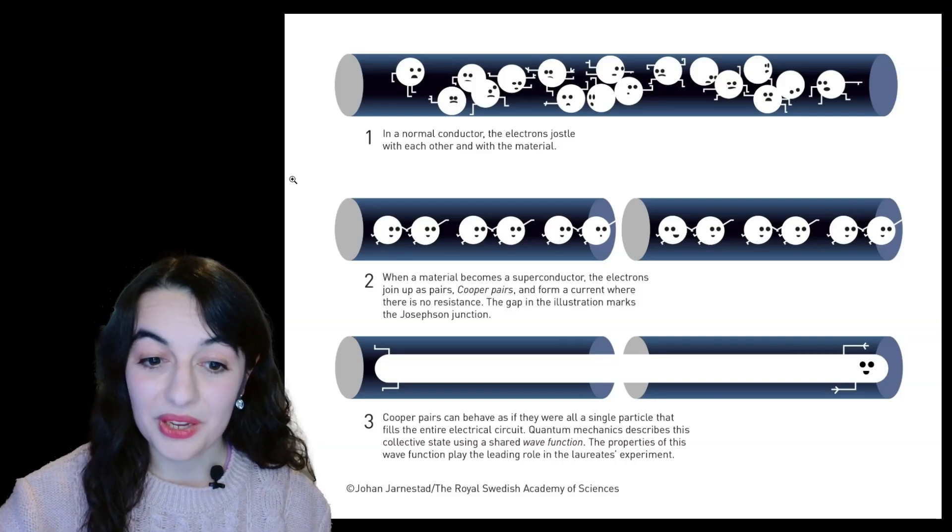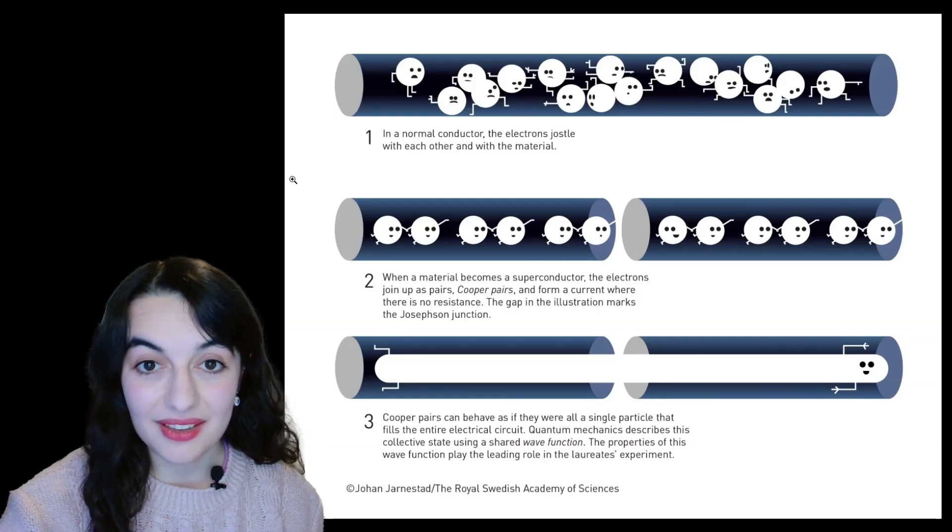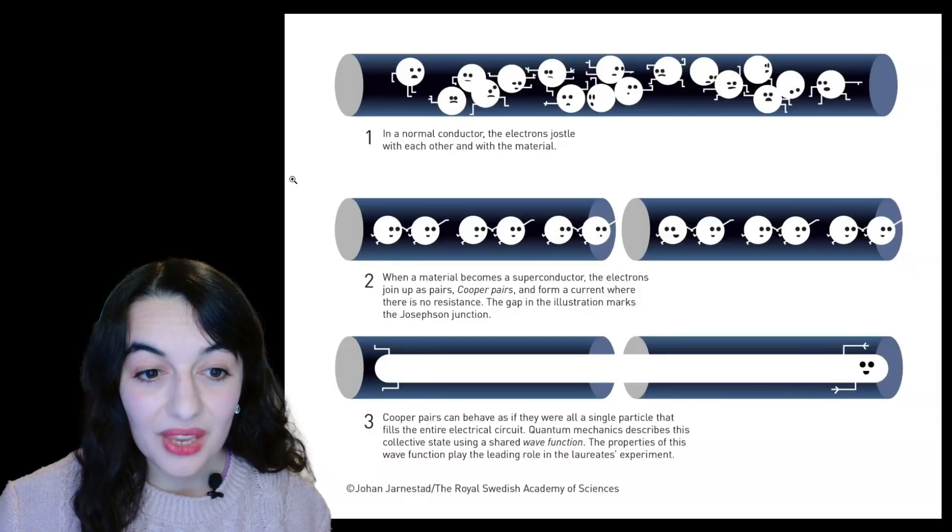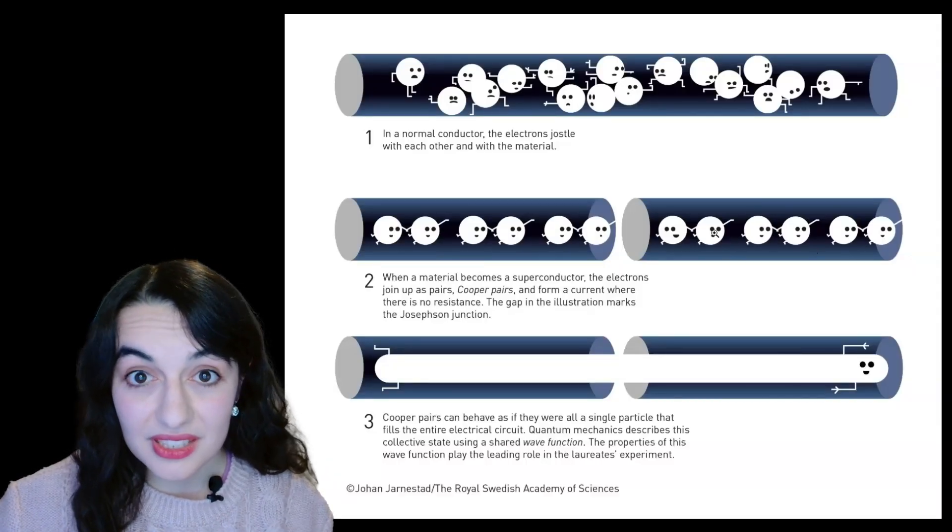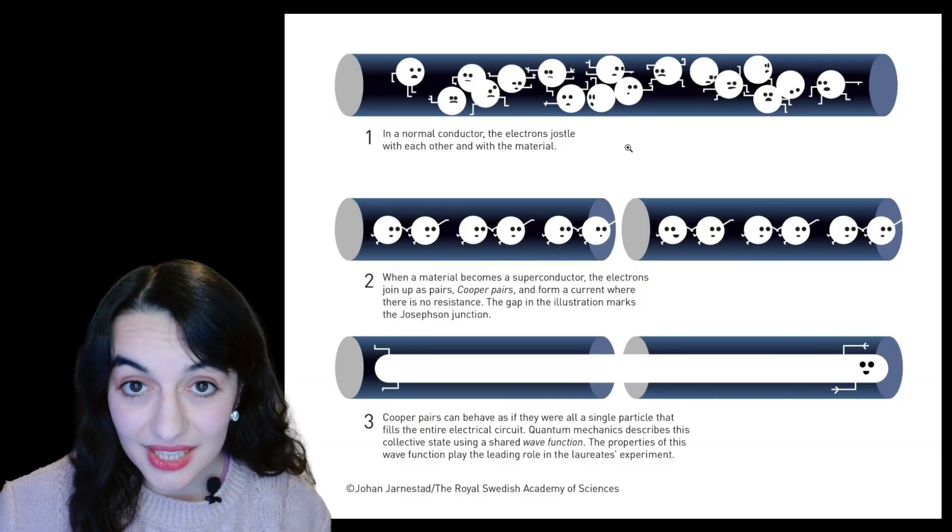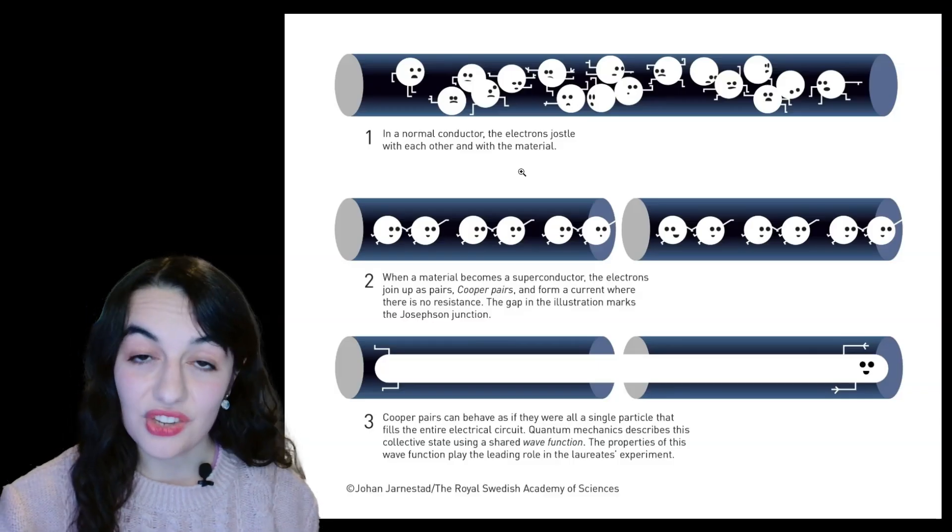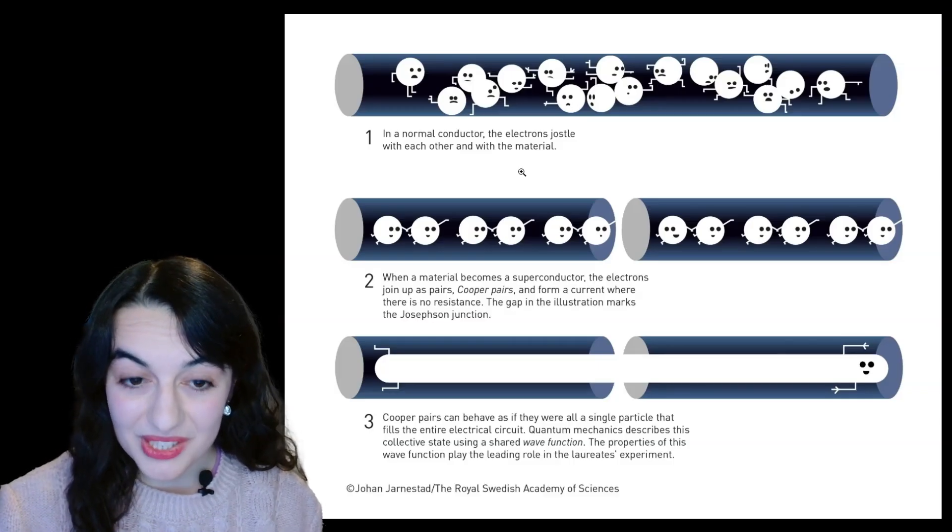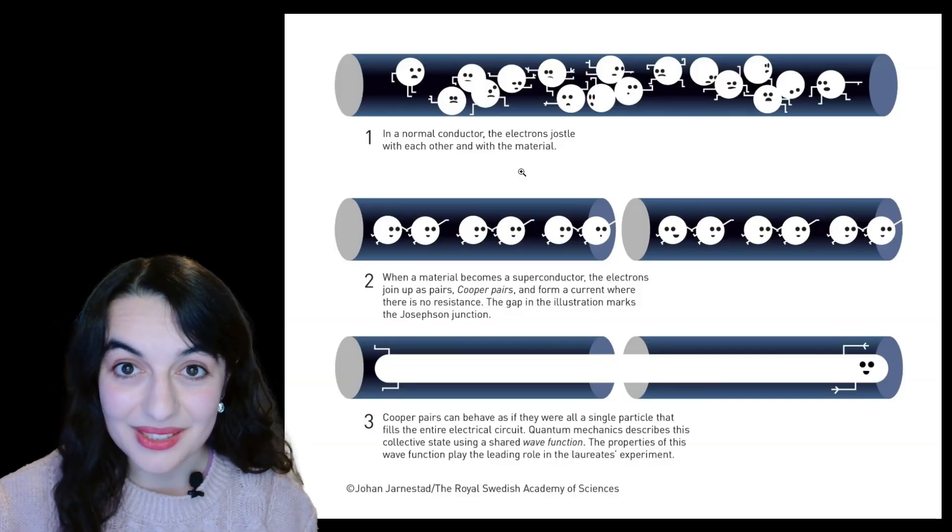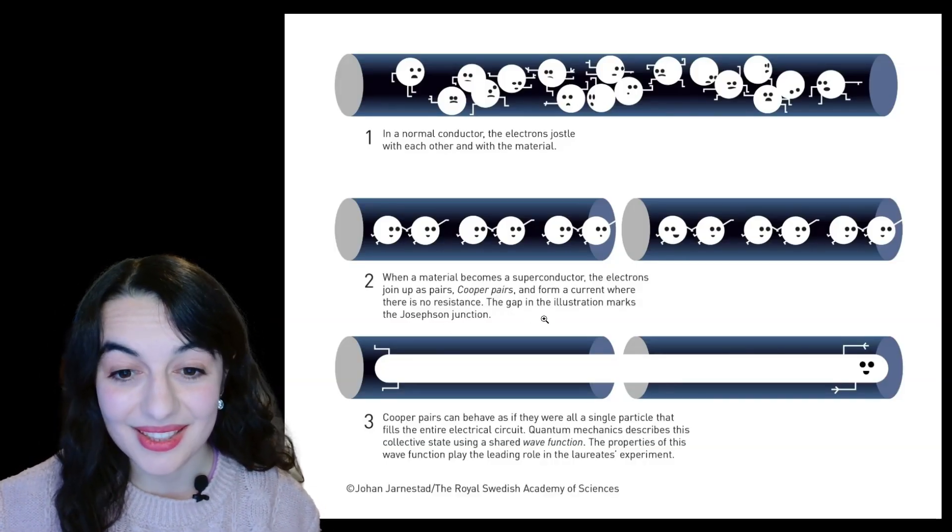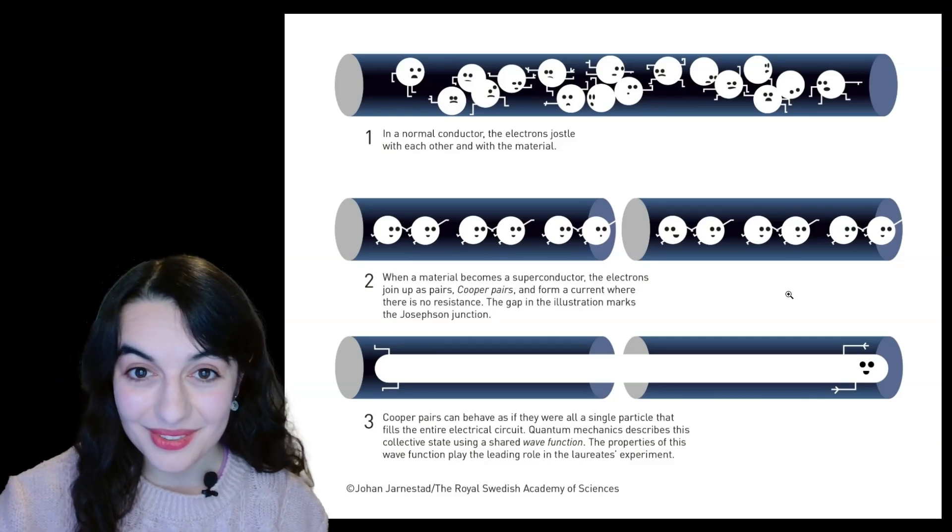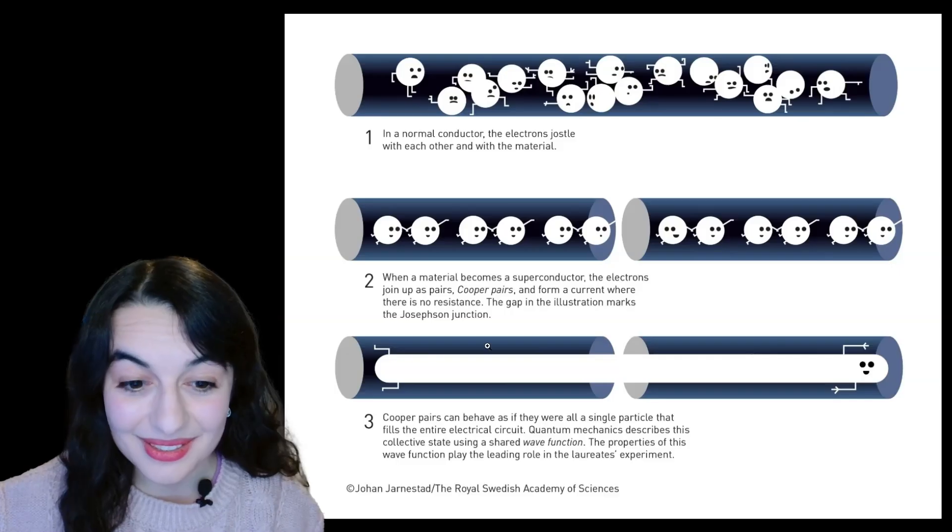That's superconductivity. And this was then applied to build a device called the Josephson junction, where you have two superconducting parts with a gap in the middle. And then you put a thin insulating material in between that gap to make this Josephson junction, which has various interesting properties. One of them being that it was predicted to be able to demonstrate this interesting macroscopic quantum behaviour. So that's what is being demonstrated in this third image.